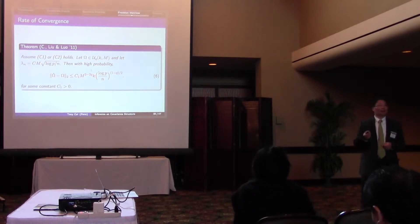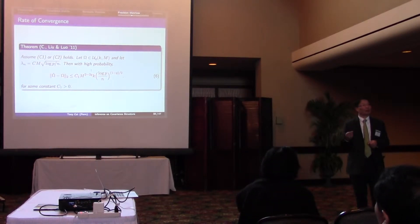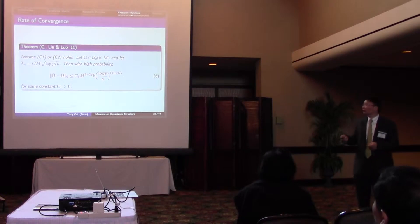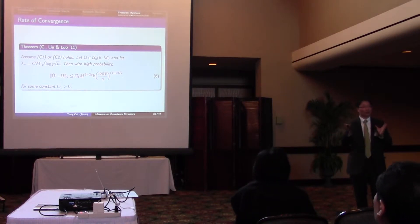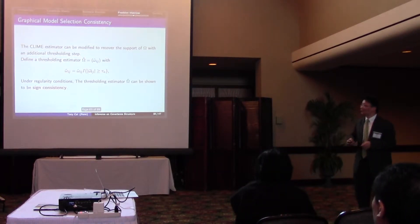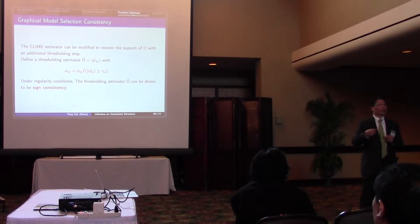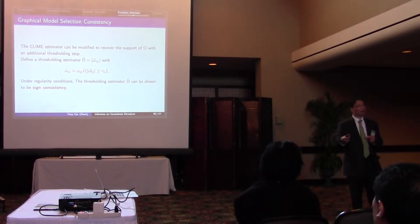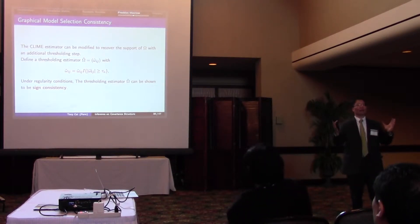For graphical models, of course, you don't really care about the specific values. You may want to estimate the support of the matrix. If that's your goal, you need one additional step. So you do thresholding. After you get the matrix, you threshold. You only keep the larger one and kill the small one.